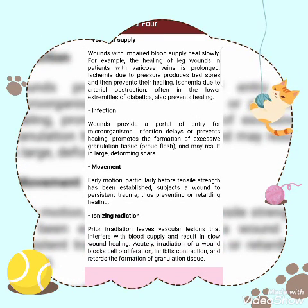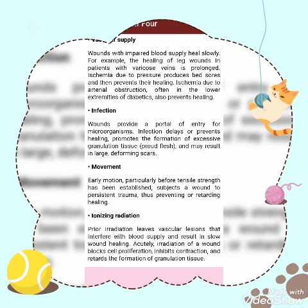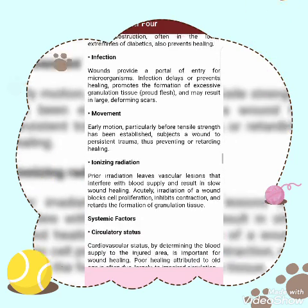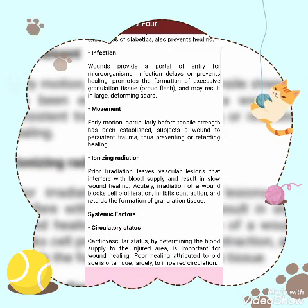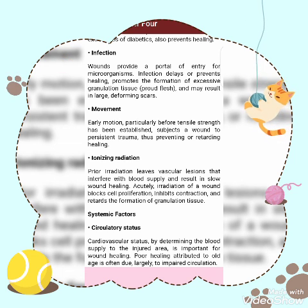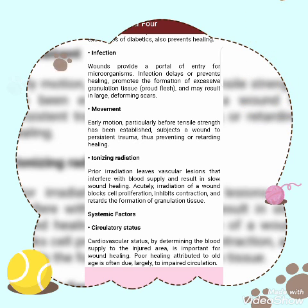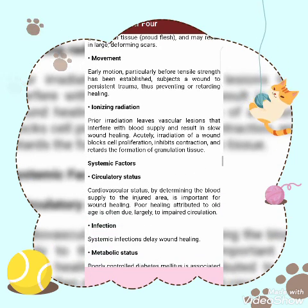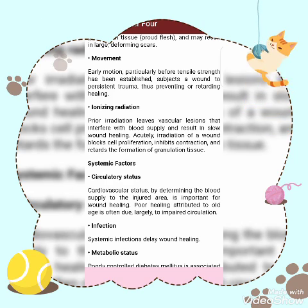Movement: early motion, particularly before tensile strength has been established, subjects the wound to persistent trauma, thus preventing or retarding healing. Ionizing radiation: prior irradiation causes vascular lesions that interfere with blood supply and result in slow wound healing. Acute irradiation of a wound blocks cell proliferation, inhibits contraction, and retards the formation of granulation tissue.